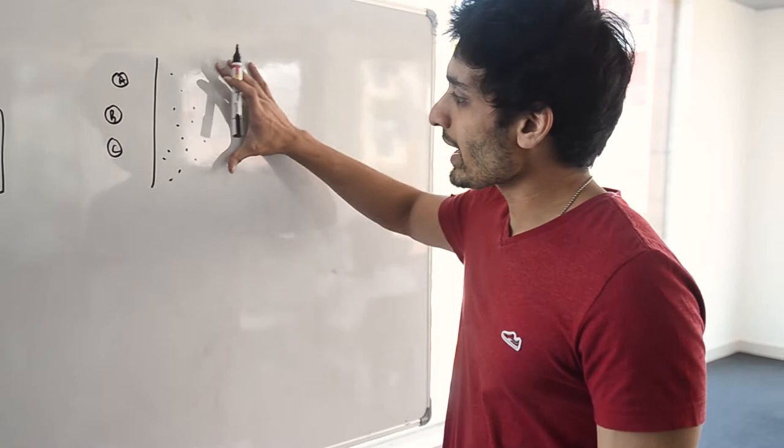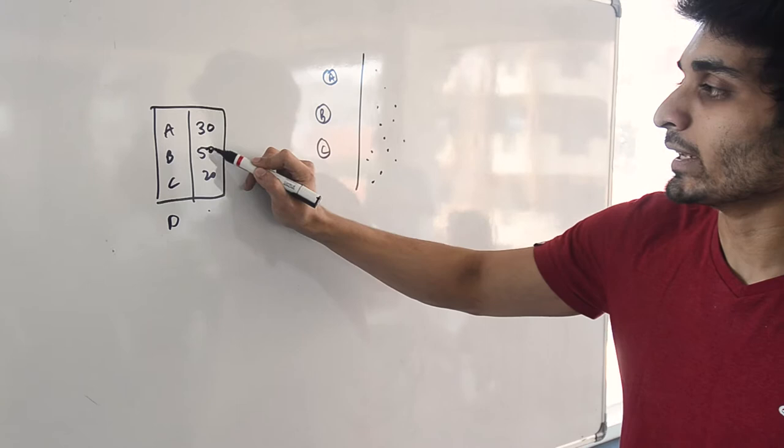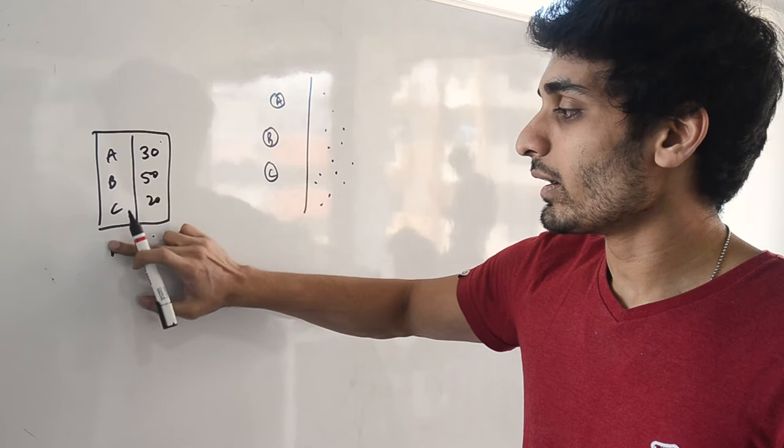But as you add more employees, you realize that if you want these employees to be on this cap table, say you want to have a person D, then because this cap table is full, you need to start diluting. This 30 has to go down, say 10%. The next person wants 10%, so A loses 10%, B loses 10%, C loses 10%. And that kind of became difficult.